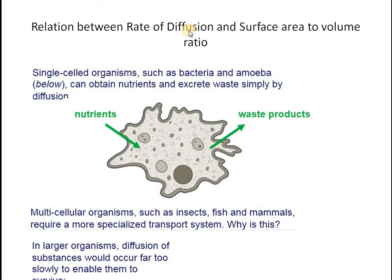Now we have to see the relationship between the rate of diffusion and surface area to volume ratio. Diffusion is the movement of molecules from the region of higher concentration to the region of lower concentration. It does not require a membrane or energy. The rate of diffusion means the movement of molecules per unit time. Single-celled organisms such as bacteria and amoeba can obtain nutrients and excrete waste simply by diffusion.